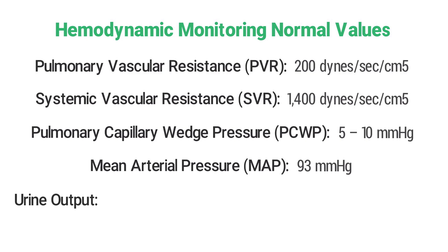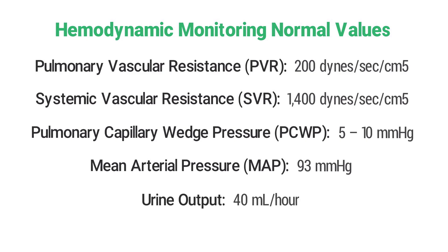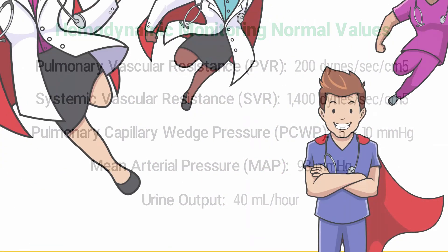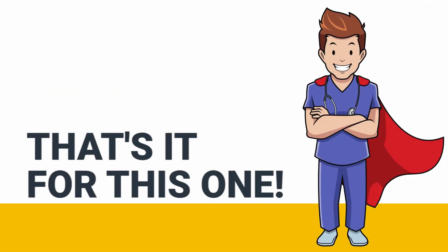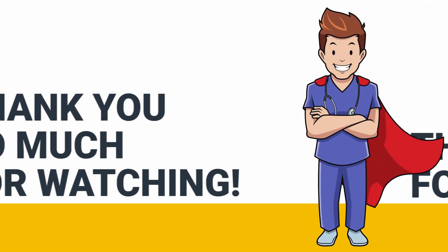And the normal urine output is 40 milliliters per hour. All right guys, that's it for this one — thank you so much for watching.